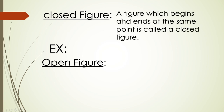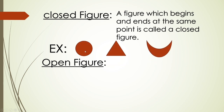Closed figure: a figure which begins and ends at the same point is called a closed figure. For example, a circle — the starting point and ending point of a circle is the same, so this is a closed figure. Similarly, for a triangle, both the starting and ending point are also the same, so this is also a closed figure.